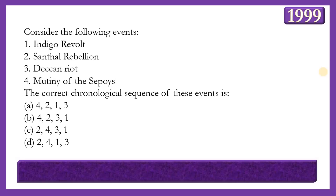Next question: Arrange the following events in correct chronological order: Indigo Revolts, Santhal Rebellion, Deccan Revolts, Mutiny of the Sepoys. The answer is option C — 2, 4, 3, 1 — meaning Santhal Rebellion (1855-56), then Sepoy Mutiny (1857), then Indigo Revolts (1857, Bengal), then Deccan Revolts (1875, in parts of Pune and Satara district of Maharashtra).